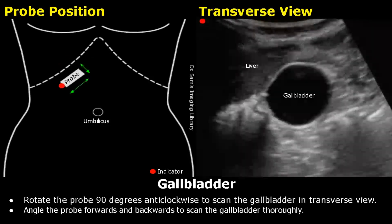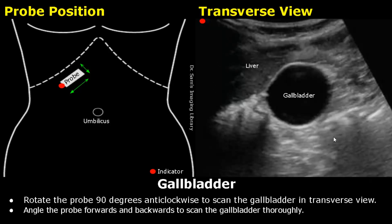To view the gallbladder in transverse view, rotate the probe 90 degrees anticlockwise in the same location and you will get an image like this. We can see a little bit of the liver. Some rib shadows are also present. These are bowel gases causing dirty posterior shadowing.